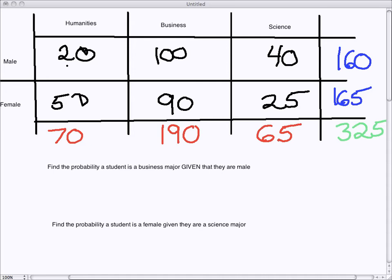It was counted up how many fell into each category, how many males were in humanities, how many females, and you can see the row and column totals. There are 70 total humanities students, 190 business, and 65 science. As well, there are 160 males total and 165 females. The seafoam green number in the corner represents the total number of students that were included in this survey, 325.